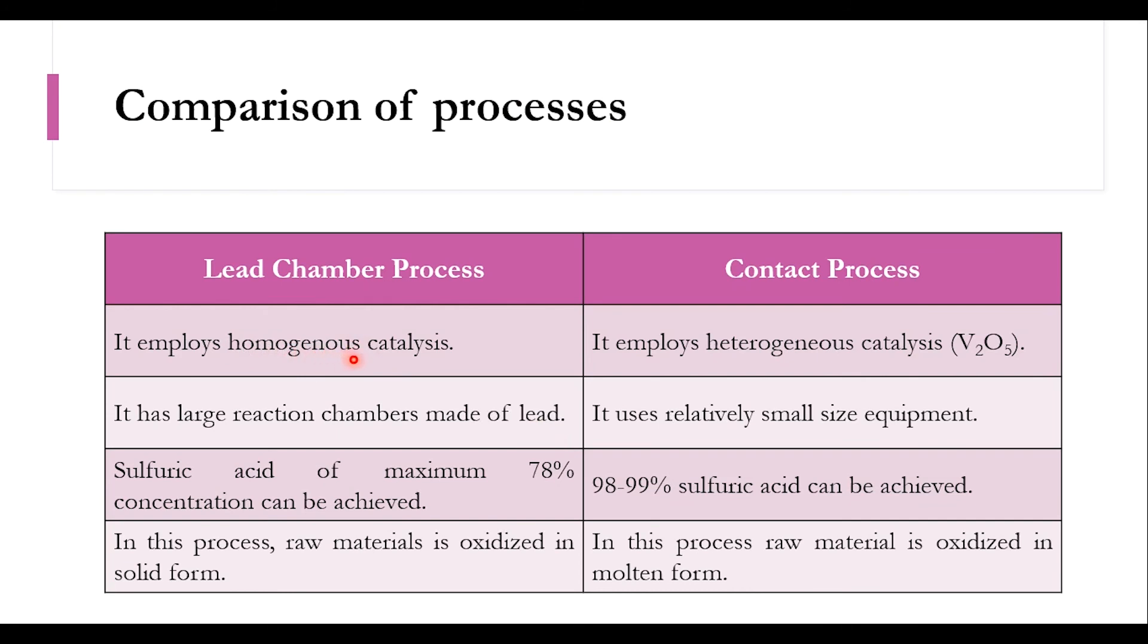Furthermore, lead chamber employs homogeneous catalysis while contact process applies heterogeneous catalysis. It has large reaction chambers made of lead, while contact process has relatively small size equipment. Again, maximum 78% purity in lead chamber versus 98 to 99% purity in contact process. In this process, raw material is oxidized in solid form, while in contact process, raw material is oxidized in molten form.